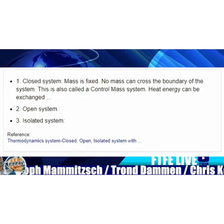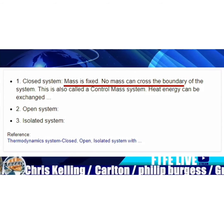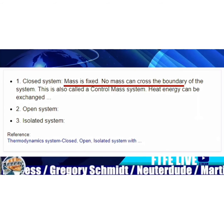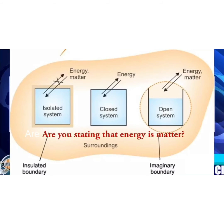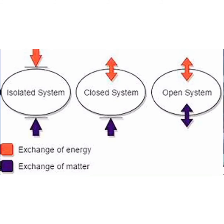Earth is classed as a closed system in physics. That's not completely true, because a closed system in physics allows for the transfer of small parts of matter and energy — it's not completely isolated like an isolated system. It allows for some transfer of energy between systems, whereas an open system and an isolated system are at the other ends of the spectrum. So when talking about systems, the Earth is classed as a closed system, and the universe is the only isolated system that there is.